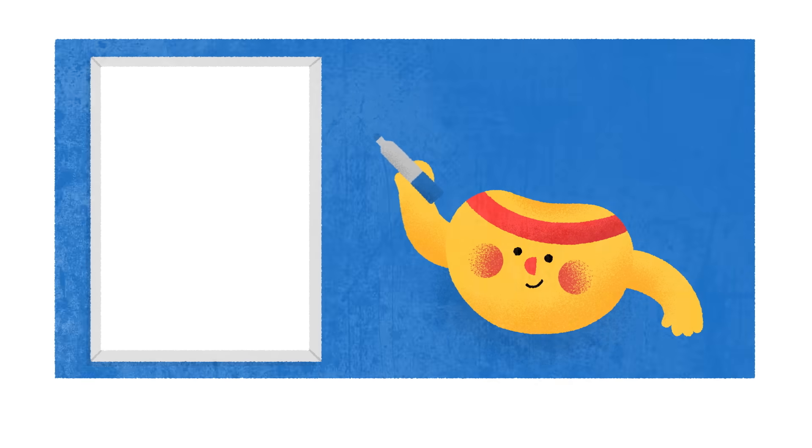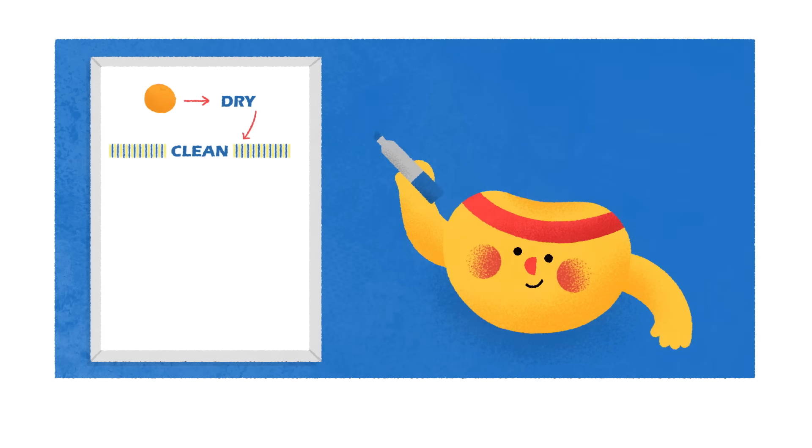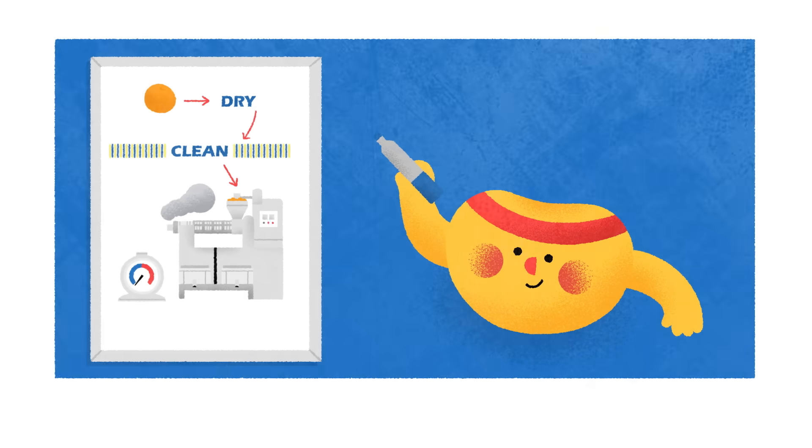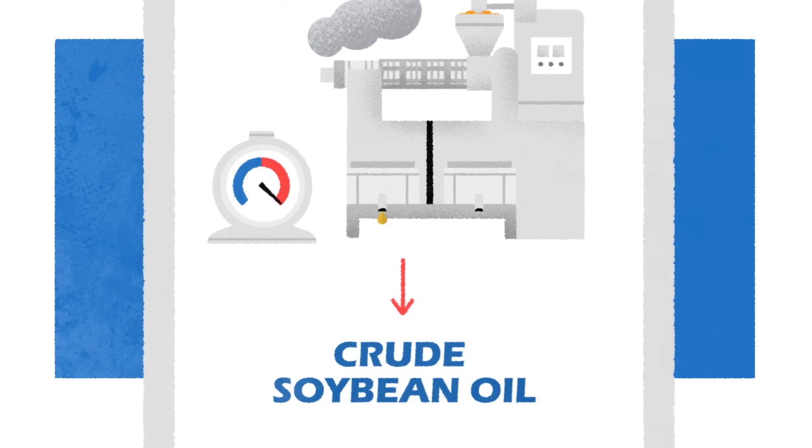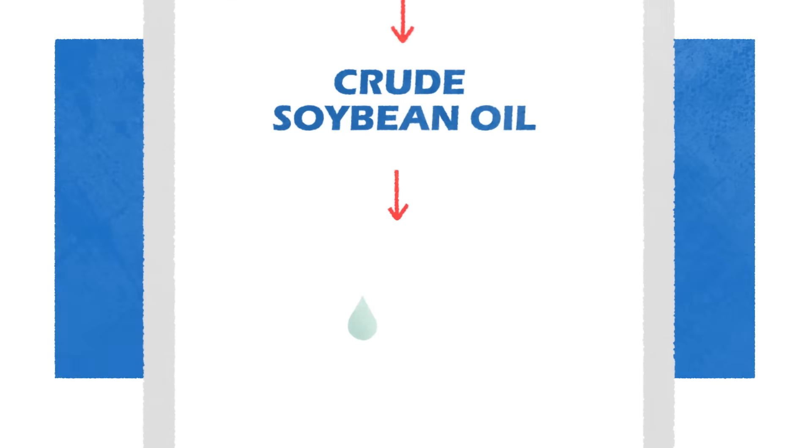In one extraction method, soybeans are dried, cleaned, and then fed into an extruder. This machine simultaneously heats and presses the beans, producing a liquid containing soy oil and other fatty components.